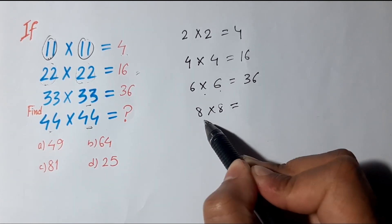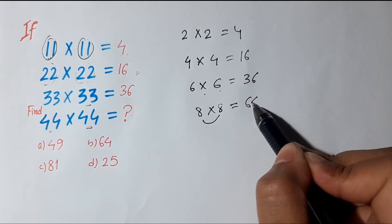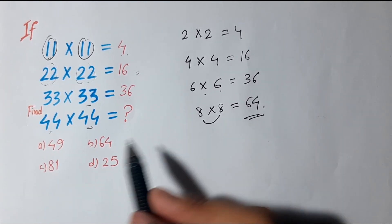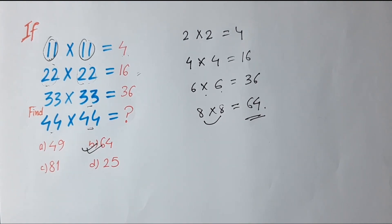Similarly for 44×44, 4+4 = 8, and again 4+4 = 8, and 8×8 = 64. So the answer is B, 64.